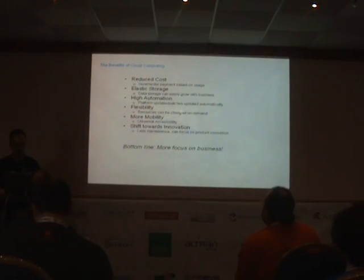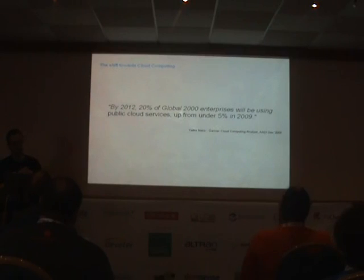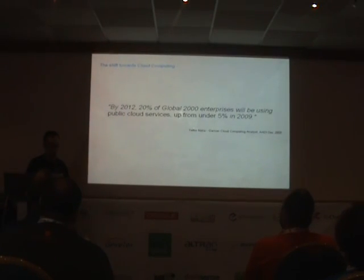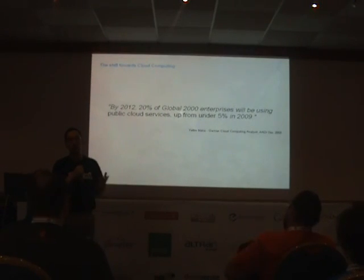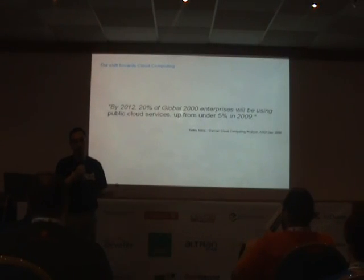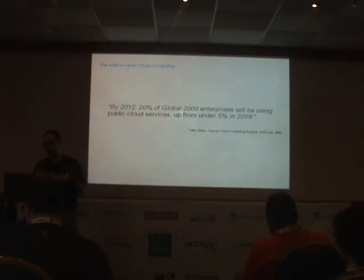Interestingly, the claim is that by next year, one-fifth of the largest 2,000 companies in the world will be using some sort of public cloud services, whereas two years ago it was less than 5%. Cloud computing is happening regardless — you cannot control whether it's going to happen. The chairman of Symantec, John Thompson, said you just should not fight it. He suggests that as a company, you slowly start migrating to cloud computing, starting with smaller, non-critical systems, because eventually everything's going to change anyway.